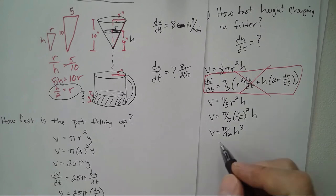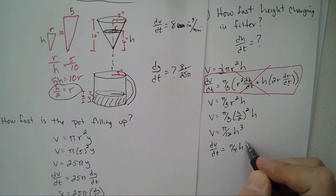Now we're ready to find the derivative with respect to time. So dV/dt equals π over 4 h² times dh/dt.